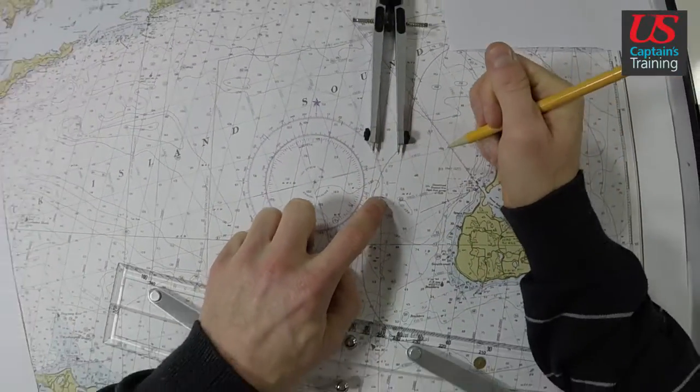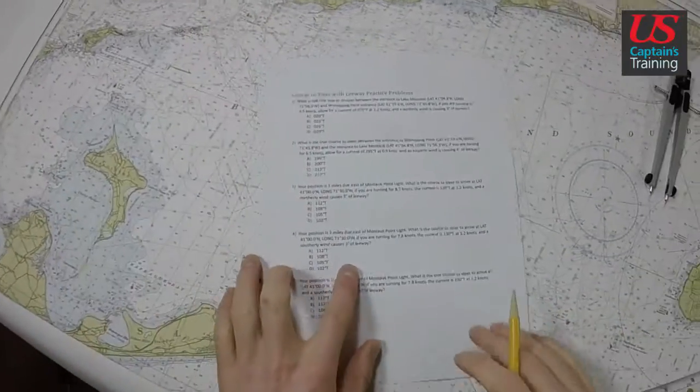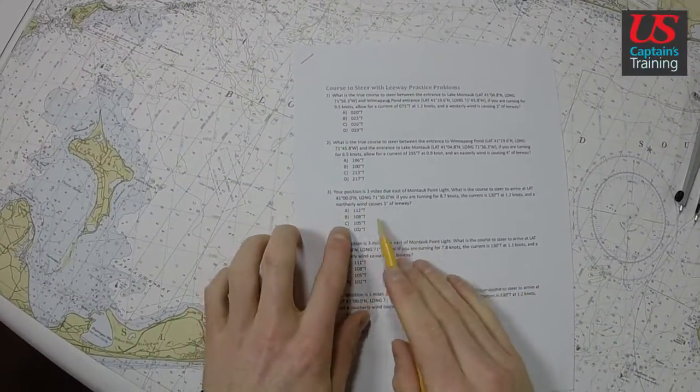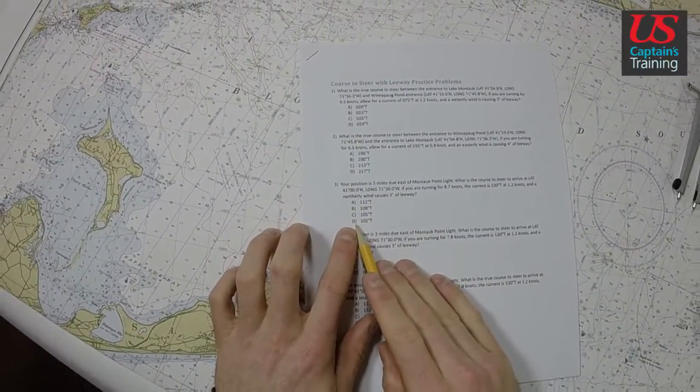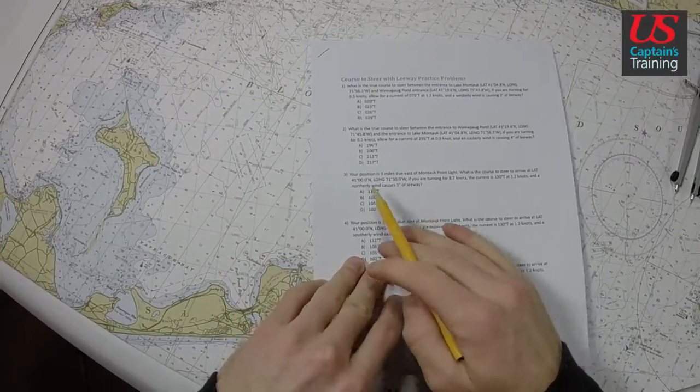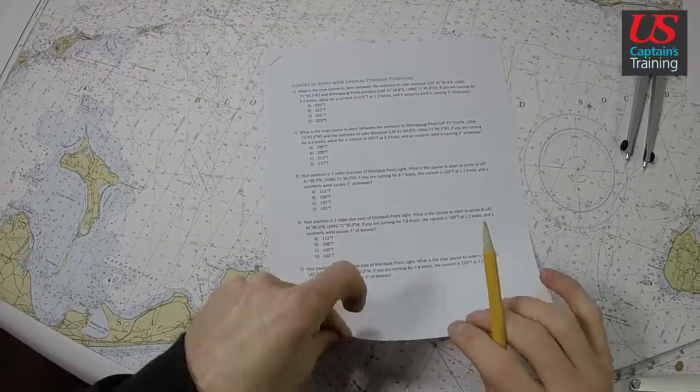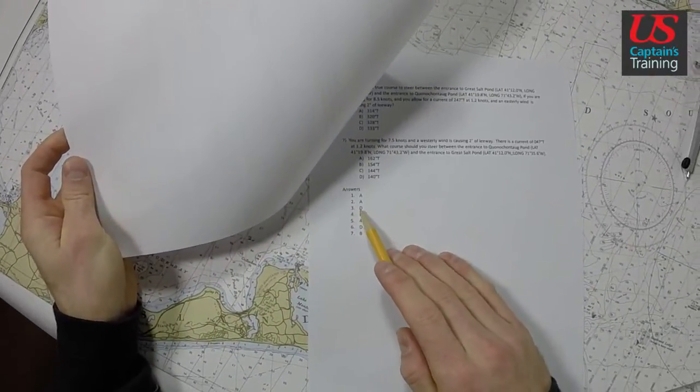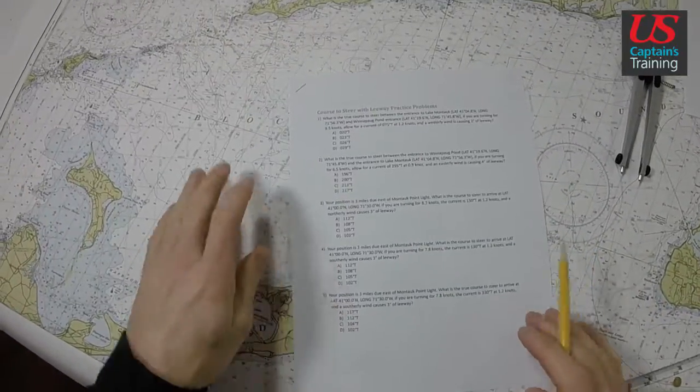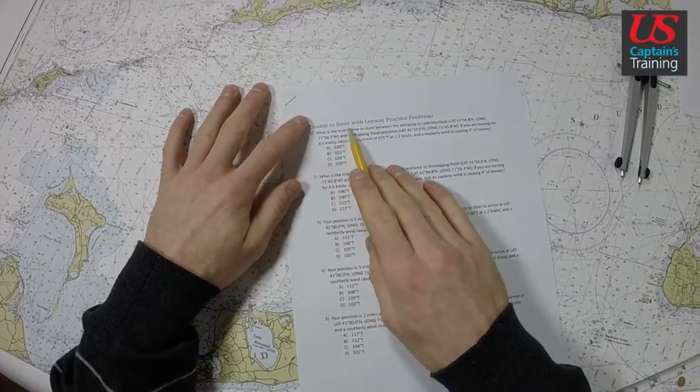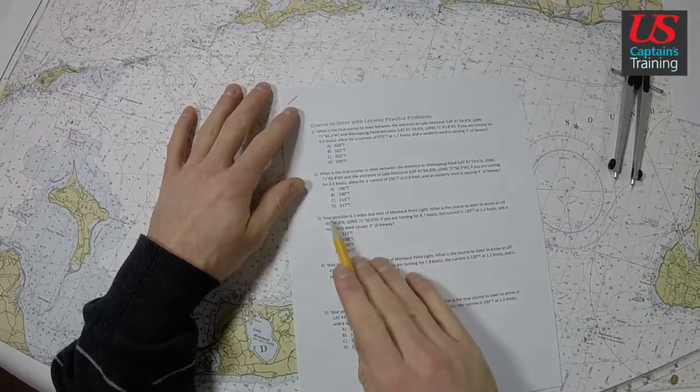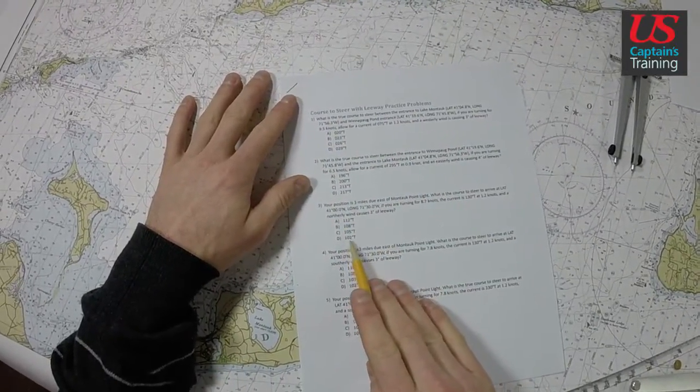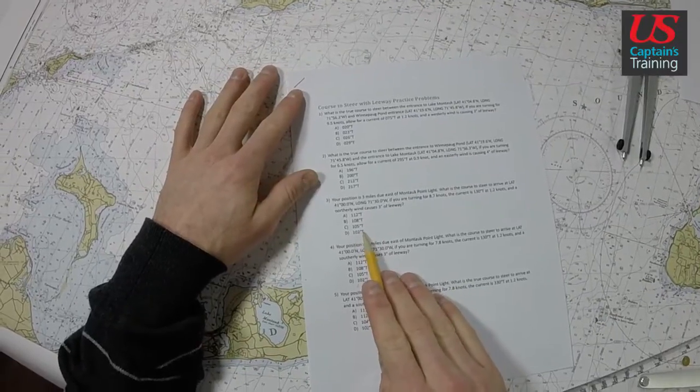When we subtracted three degrees for a northerly wind, we have 102°. Number three, 102° is D. Let's check that: number three, D, 102°. So the answer to course to steer with leeway practice problem number three is 102° true, D.